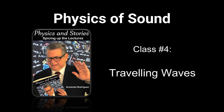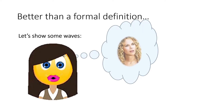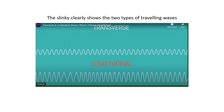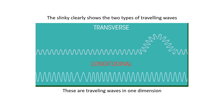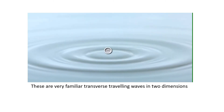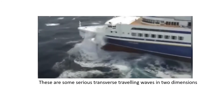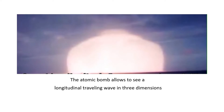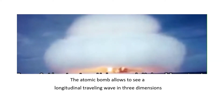Class number four: traveling waves. An informal definition of waves — let's show some waves. The slinky clearly shows two types: transverse and longitudinal. These are traveling waves in one dimension. Familiar transverse traveling waves exist in two dimensions, and the atomic bomb lets us see a longitudinal traveling wave in three dimensions.